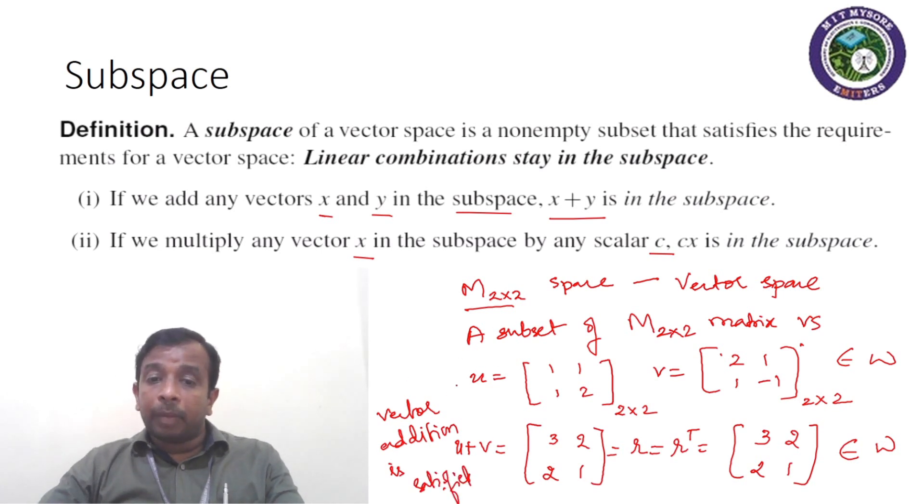And now if I multiply this U with a scalar C—that is, let me take C as 2—then each element is multiplied with 2: 1 into 2 is 2, 1 into 2 is 2, 1 into 2 is 2, and 2 into 2 is 4. So the elements would be 2, 2, 2, 4. Again, when I make it transpose, I see that I will again get 2, 2, 2, 4.